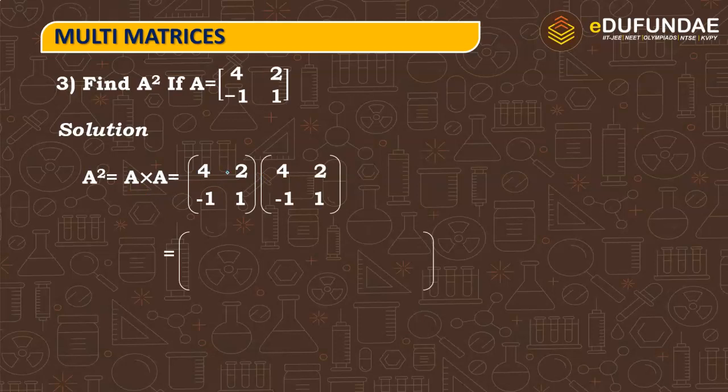So, multiplication is now learned. First row, first column will go to a square matrix. So, here, 4 into 4 plus 2 into minus 1. First row, second column multiply, 4 into 2 plus 2 into 1. Then, first matrix second row, multiply, second matrix first column. So, minus 1 into 4 plus 1 into minus 1. Then, minus 1 into 2 plus 1 into 1.